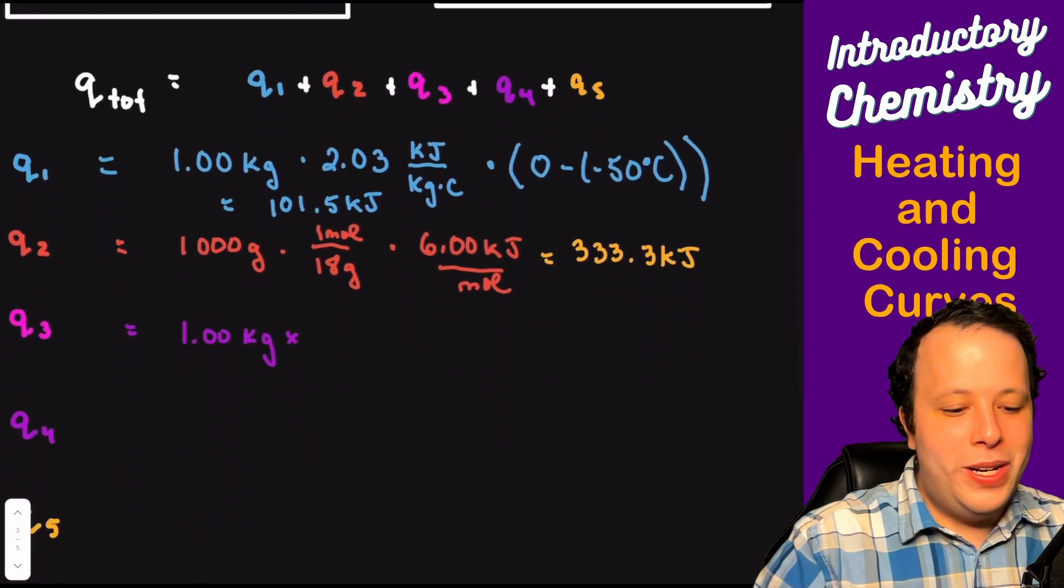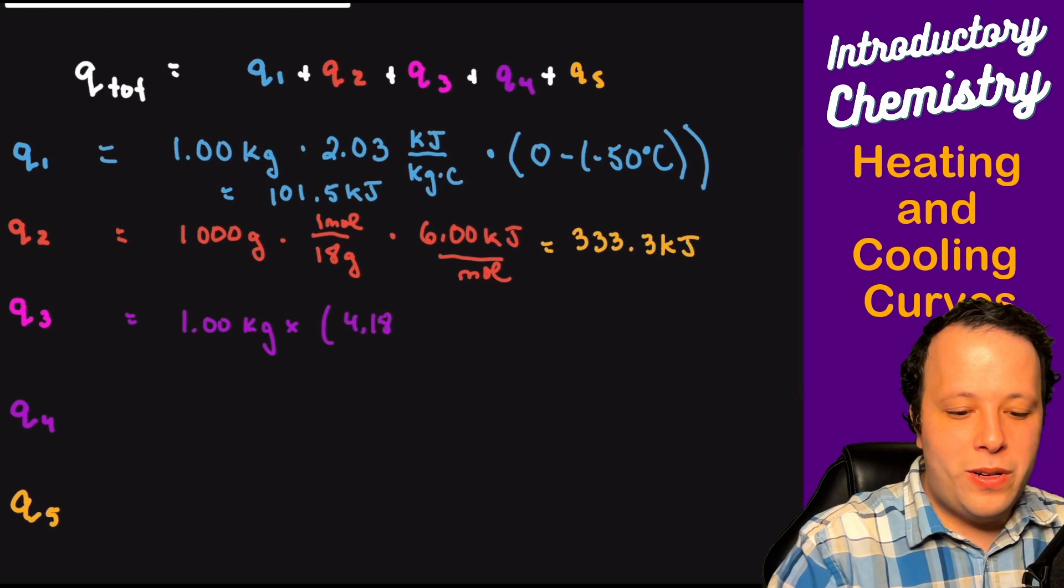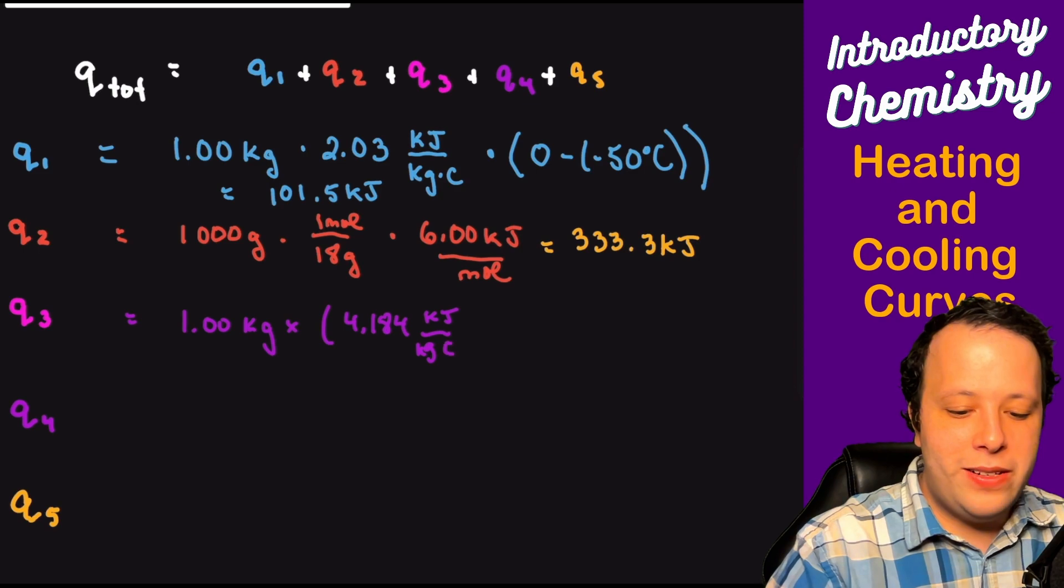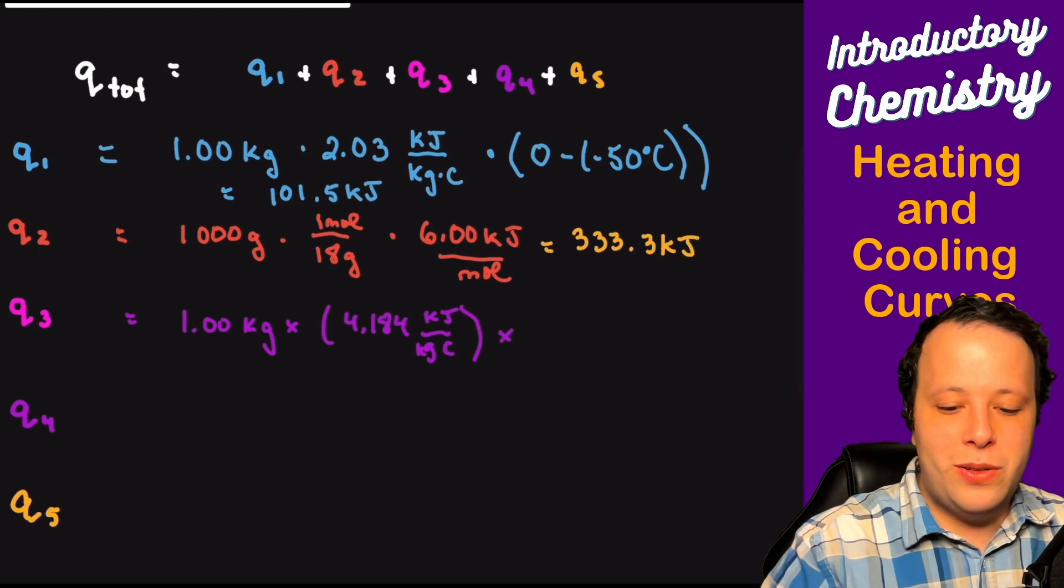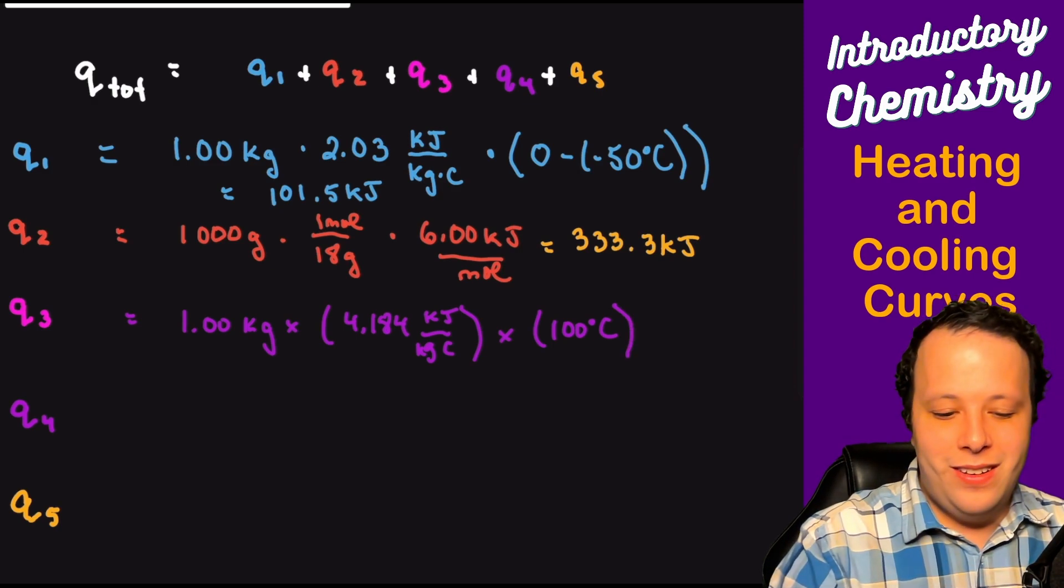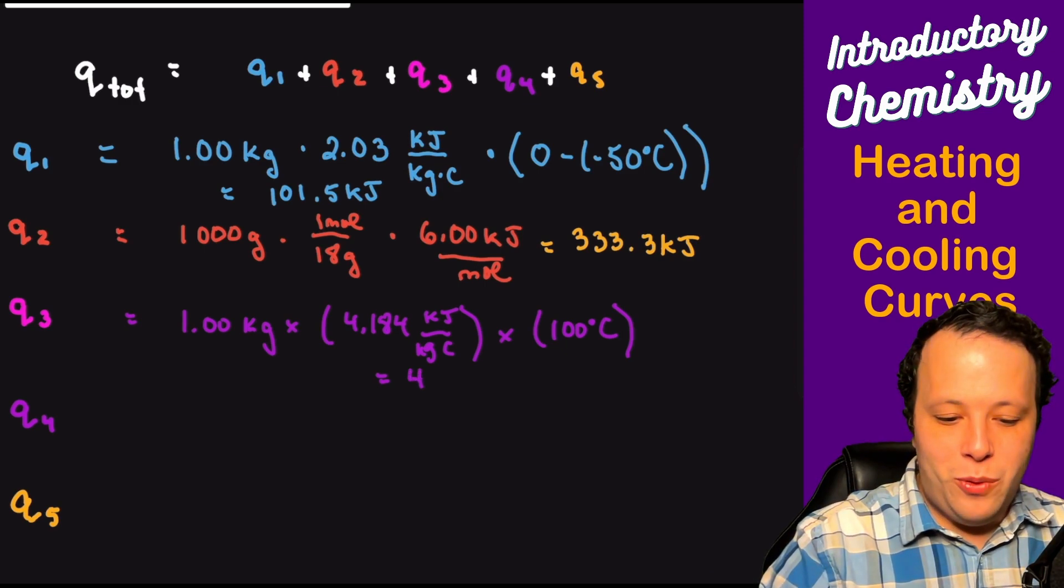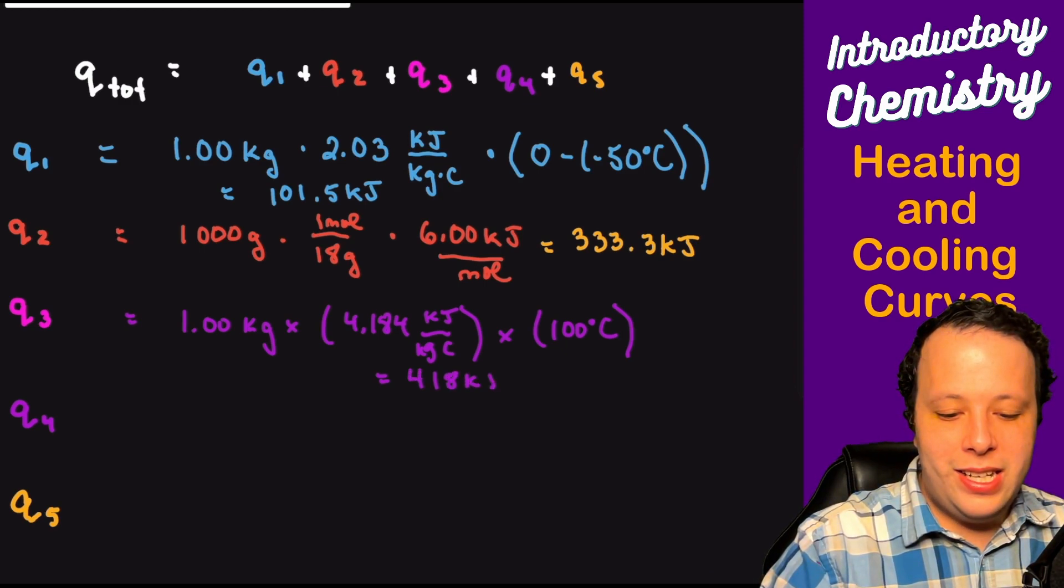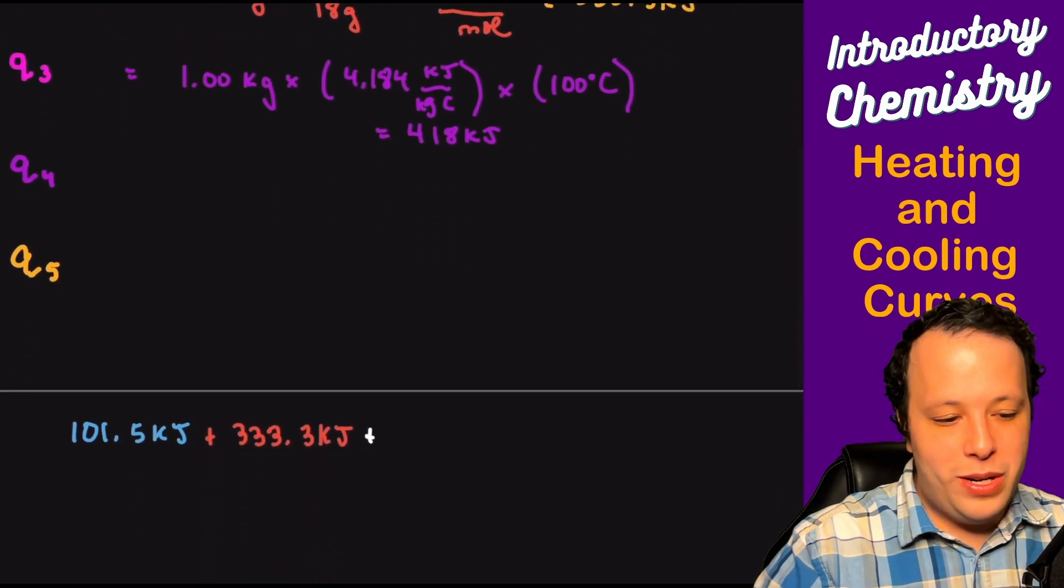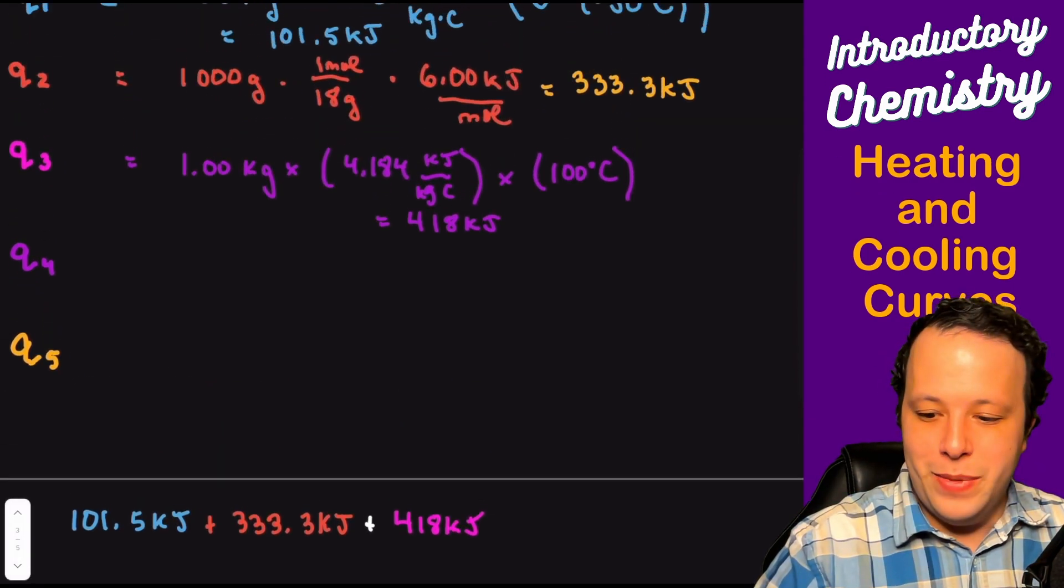So when we have that, one kilogram times 4.184, and this is in kilojoules over kilograms by Celsius times 100 degrees C is our change in this case. Now when we do one times 100 times 4.184, we're going to get 418 kilojoules for Q3. Okay, so we're going to add that in here to 418 kilojoules.